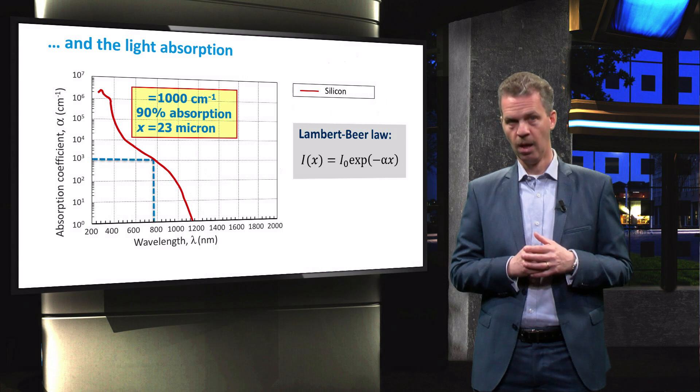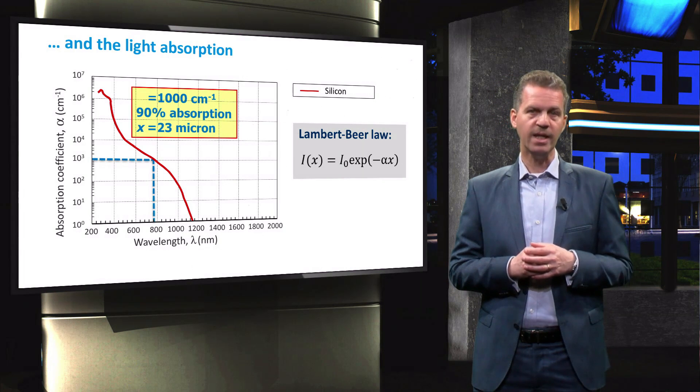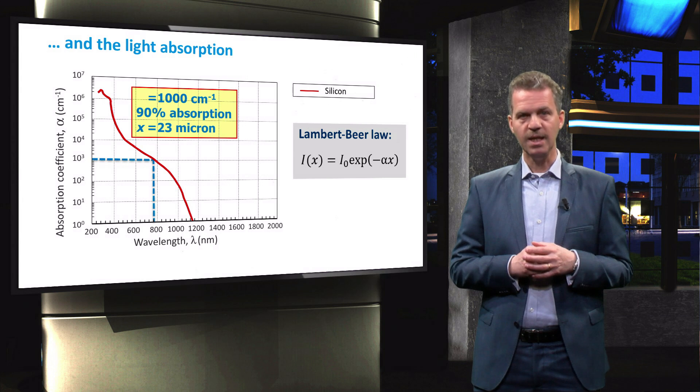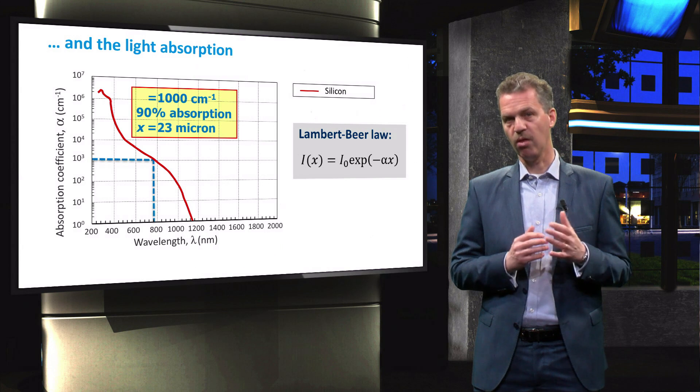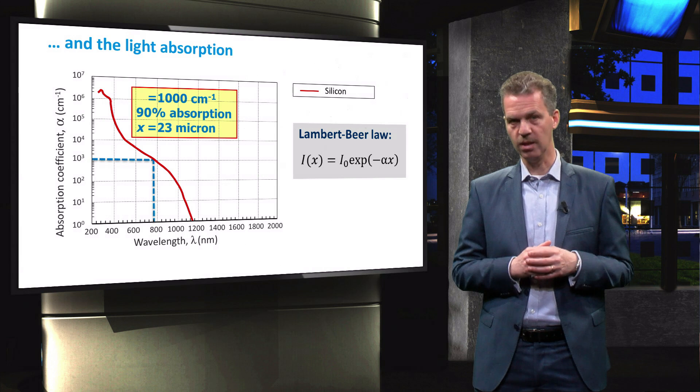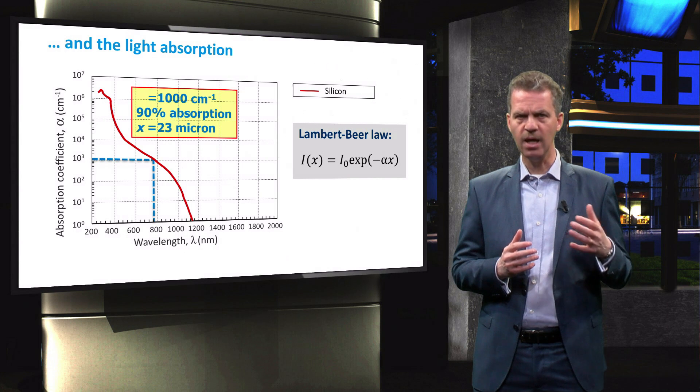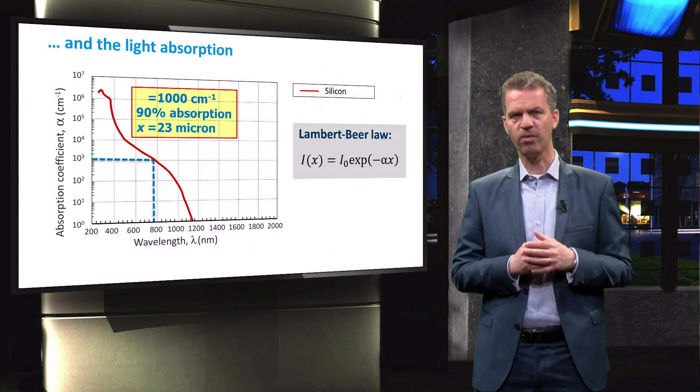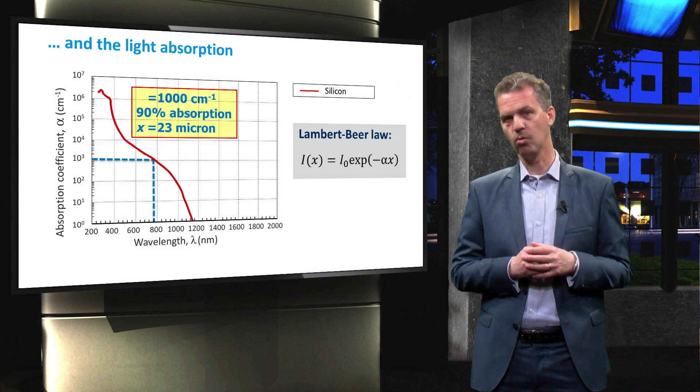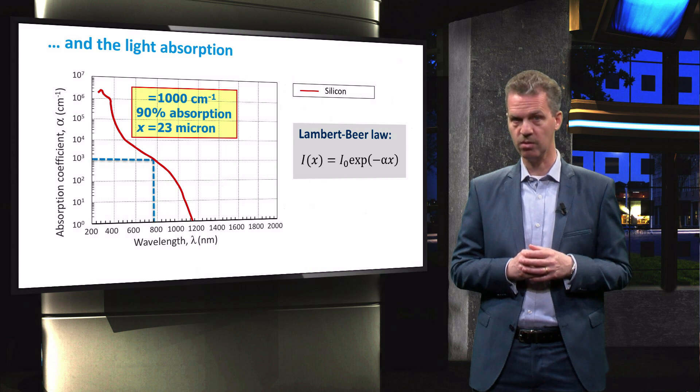For instance, at a wavelength of about 800 nm, we see that the absorption coefficient is about 1000 inverse centimeters. And then we need a layer of silicon with a thickness of 23 micrometers to absorb 90% of the incident photons.